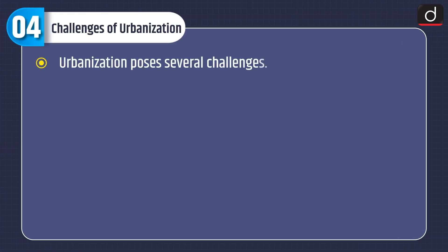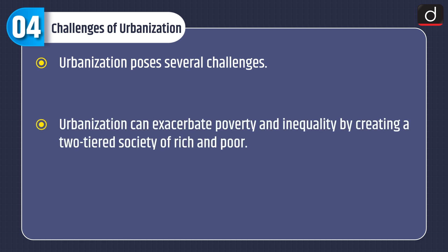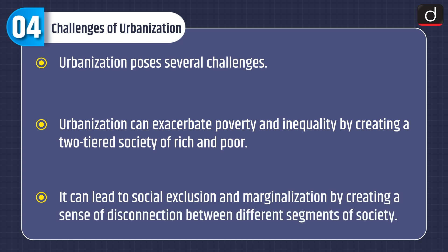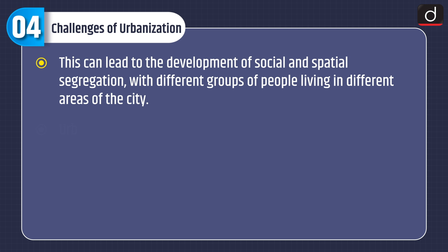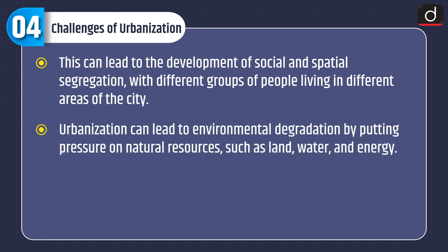Now moving on to challenges of urbanization. Urbanization poses several challenges. Urbanization can exacerbate poverty and inequality by creating a two-tiered society of rich and poor. It can lead to social exclusion and marginalization by creating a sense of disconnection between different segments of society. This can lead to the development of social and spatial segregation, with different groups of people living in different areas of the city.